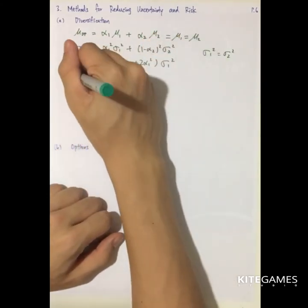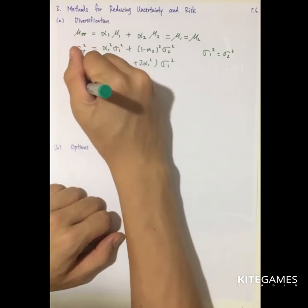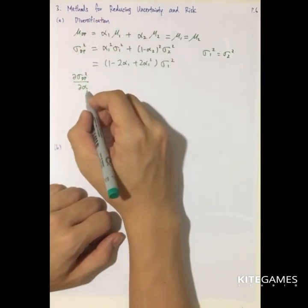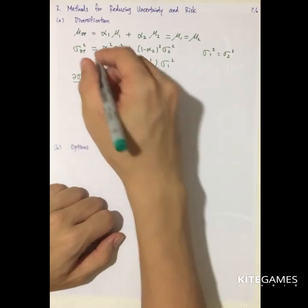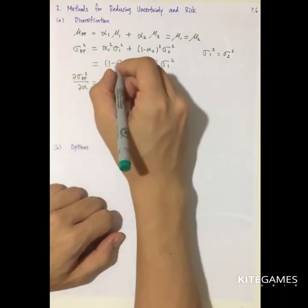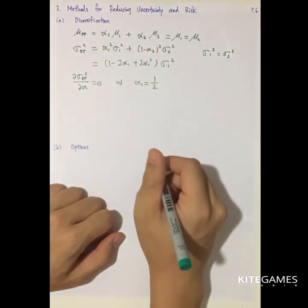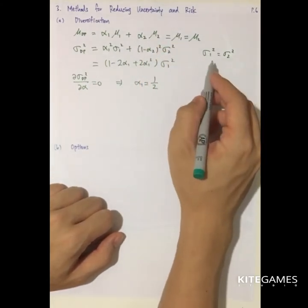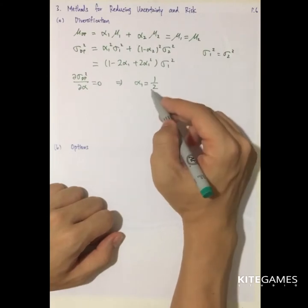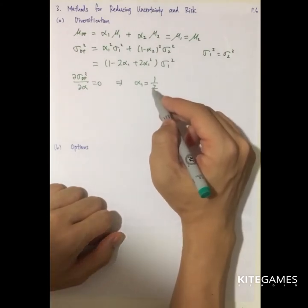So if we want to find the share of investment that minimizes the variance, we will get alpha 1 is equal to 1 half. That means if the risk of two shares are the same, we should evenly distribute the wealth into these two shares.